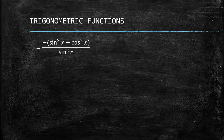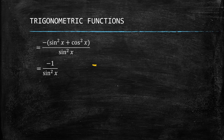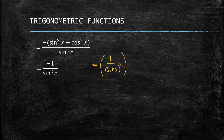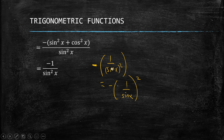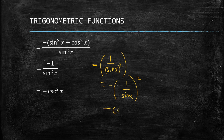We now have sine squared x plus cosine squared x in the numerator, which by the Pythagorean identity equals 1. This gives us negative 1 over sine squared x. We can rewrite this as negative (1 over sine x) squared, and since 1 over sine x is cosecant x, we get negative cosecant squared x.